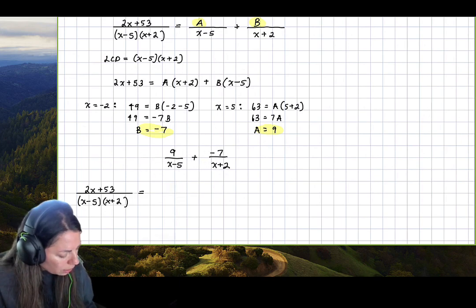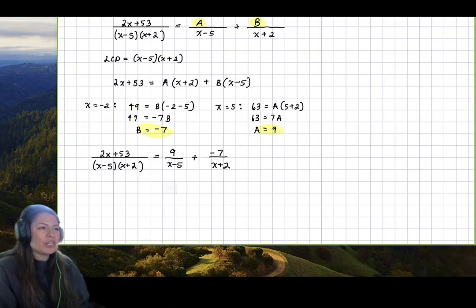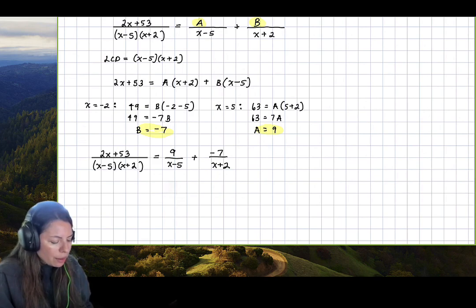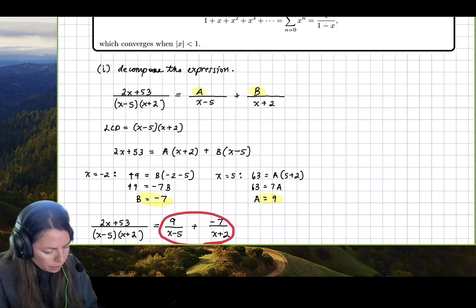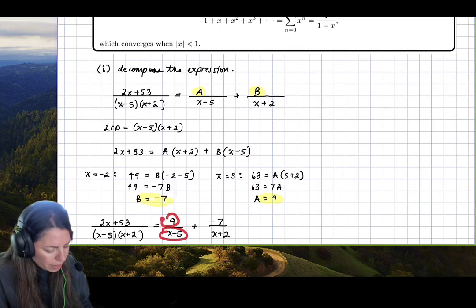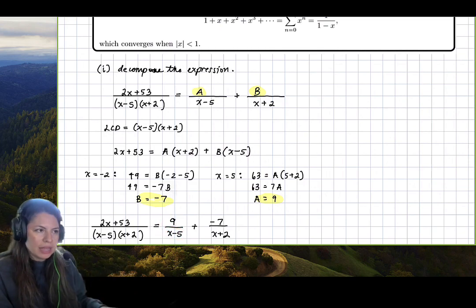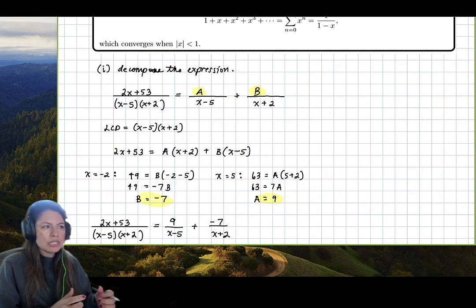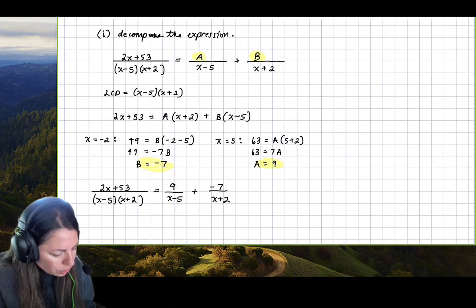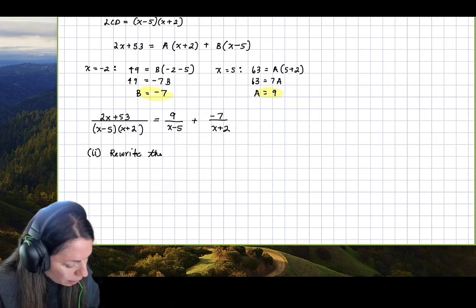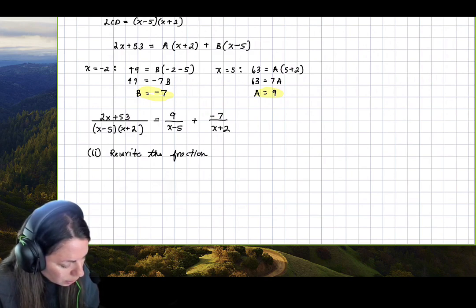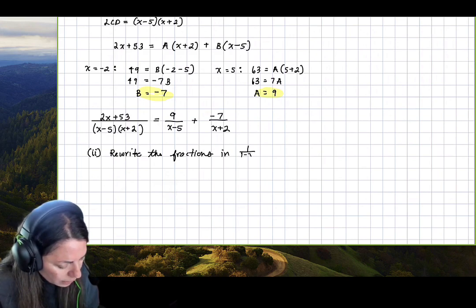So A is 9 and B is negative 7. We can now rewrite the original expression as 9 over x minus 5 plus negative 7 over x plus 2, which is equivalent to 2x plus 53 over x minus 5 times x plus 2. That completes the decomposition using partial fractions. Step 2 is to now rewrite the fractions in 1 over 1 minus x form.